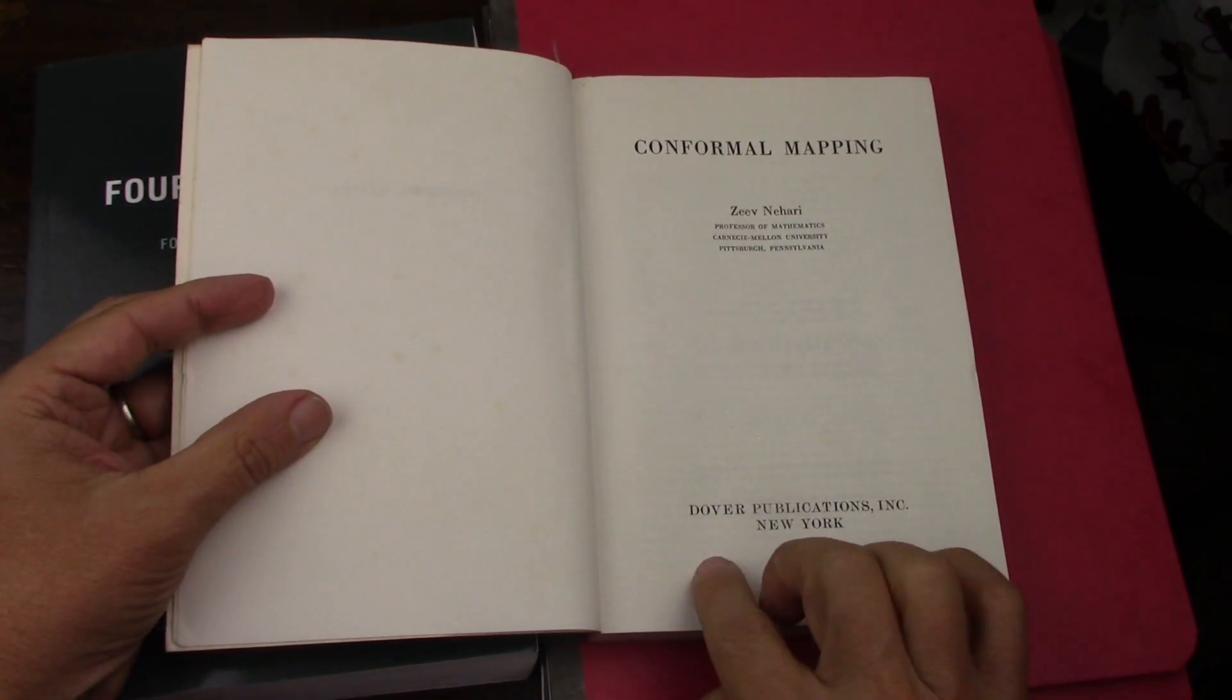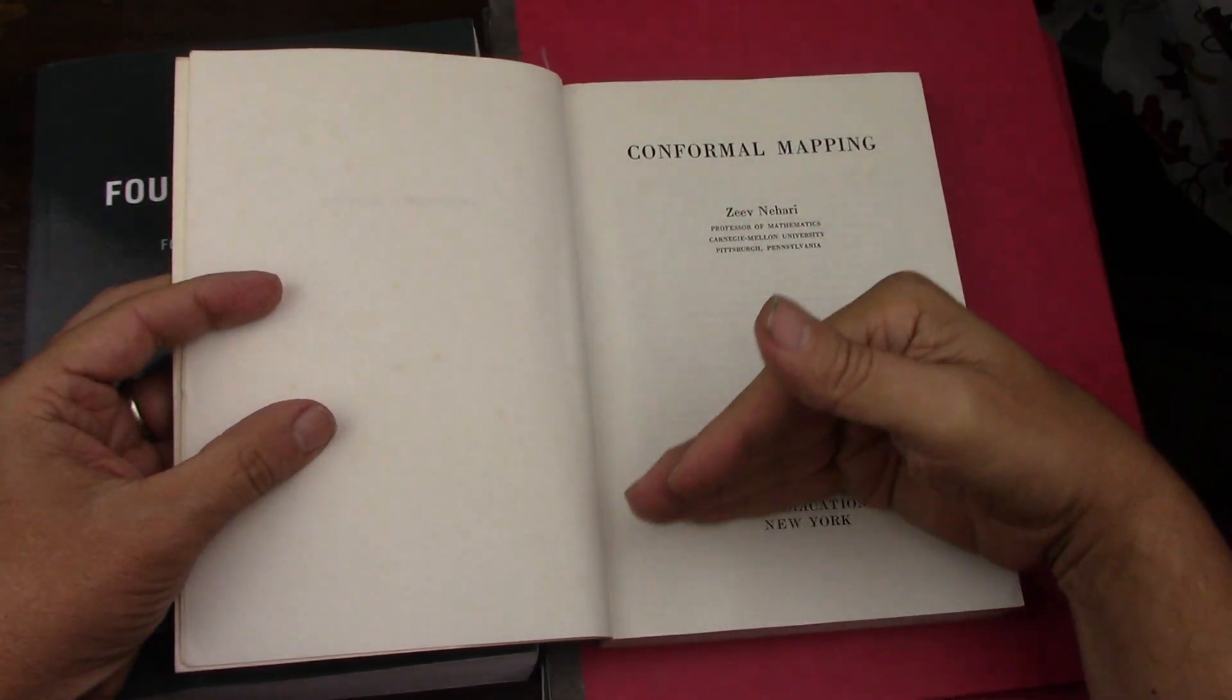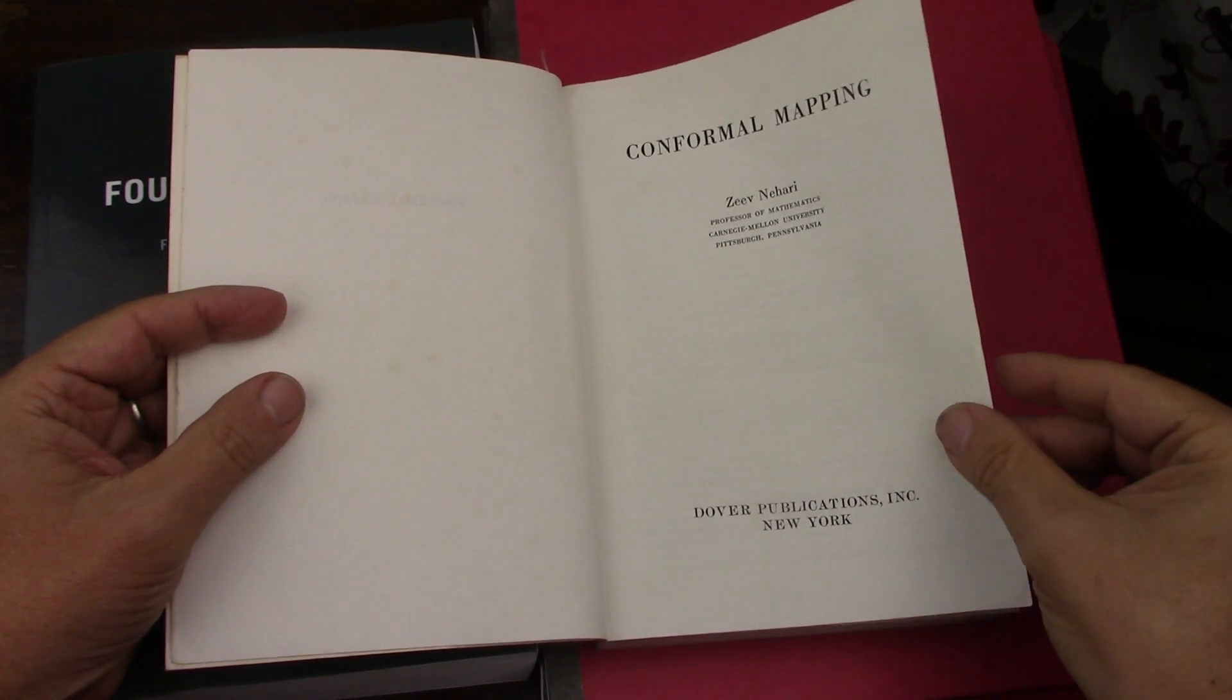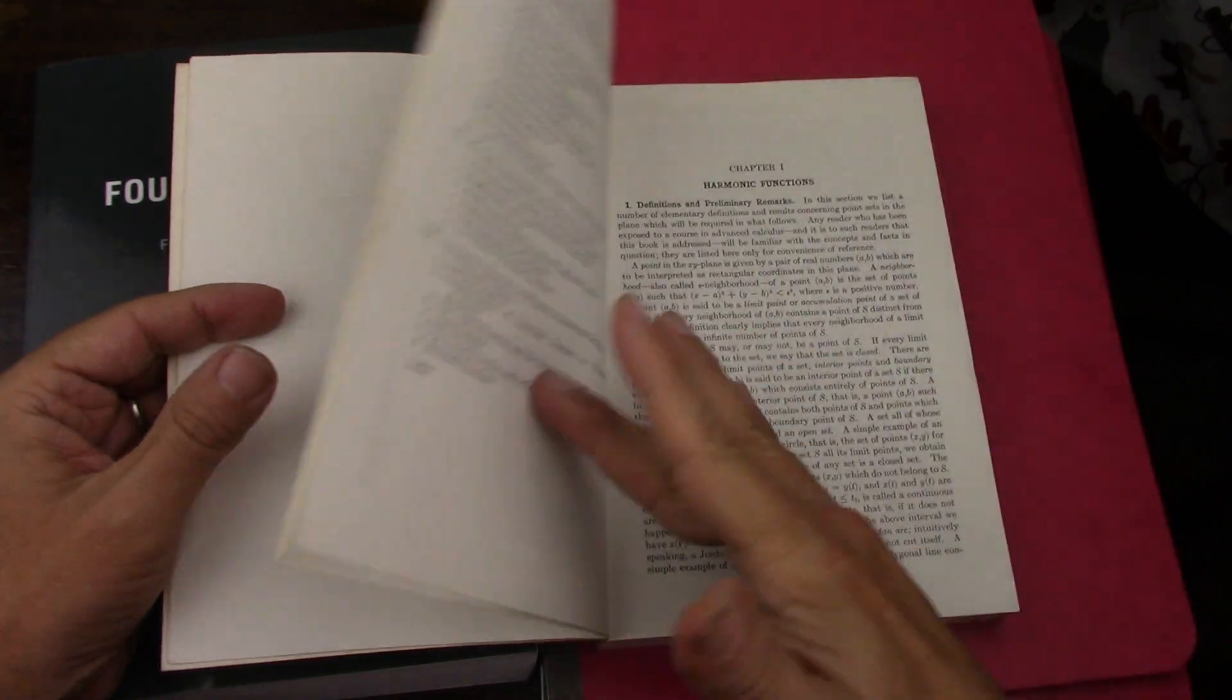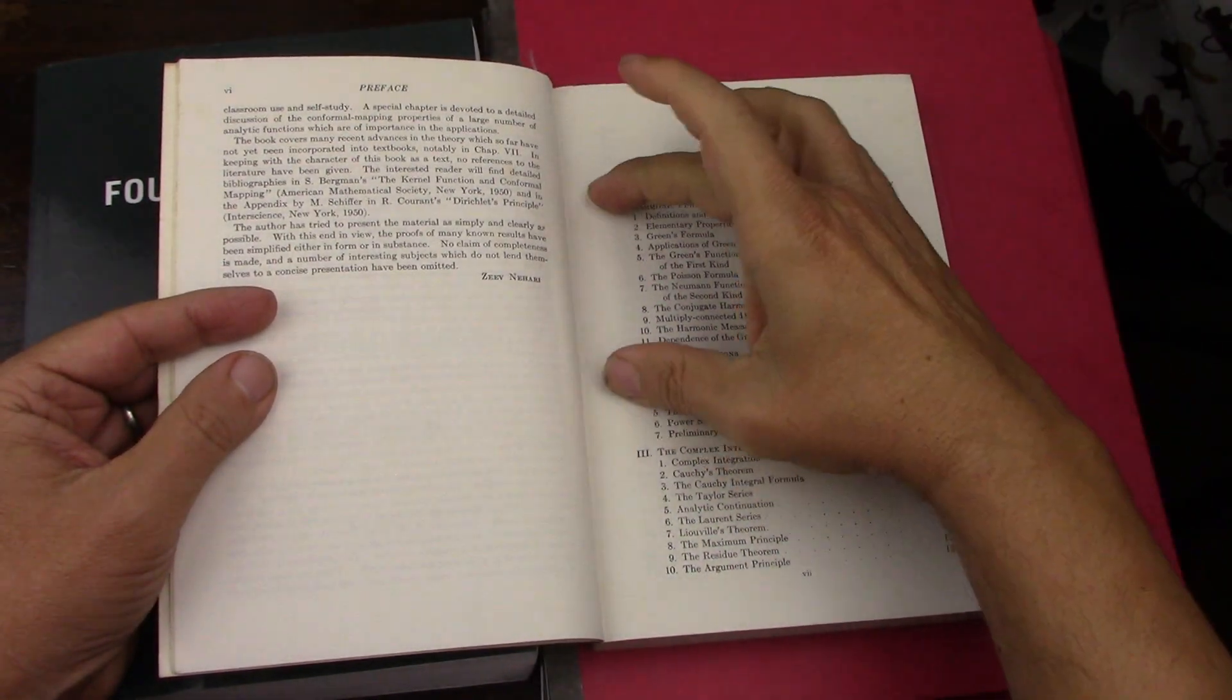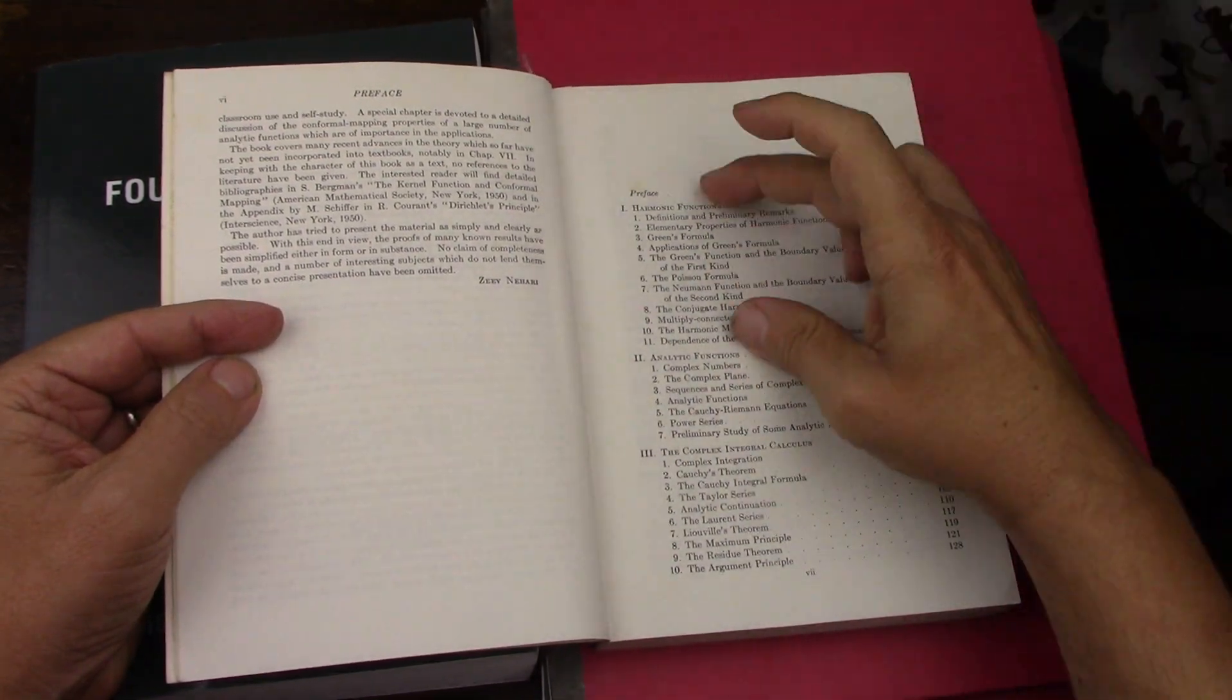Some Dover books can be hit and miss and I even bought another book that was about conformal mapping that I think is going to be pretty much useless because it's just too high level and it doesn't have any problems it's just kind of like a treatise on conformal mapping with some really advanced stuff I just didn't understand but this one is the opposite this one is meant at my level and it doesn't have answers in the back, unfortunately.